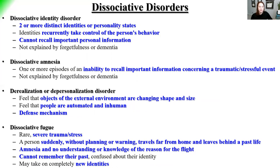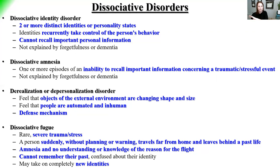Dissociative disorders fall into four main categories. Dissociative identity disorder — also called multiple personality disorder — involves two or more distinct identities that recurrently take control of the person's behavior. The patient cannot recall what happens in one personality state versus another, and this cannot be explained by forgetfulness or dementia. Dissociative amnesia involves one or more episodes where the patient cannot recall any information about a traumatic or stressful event — they literally excise that event from their memory timeline.